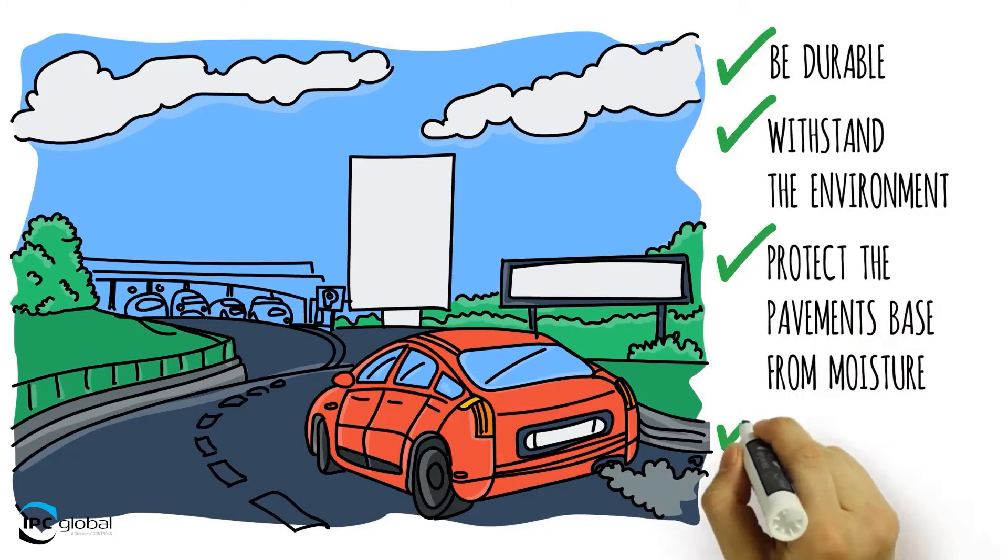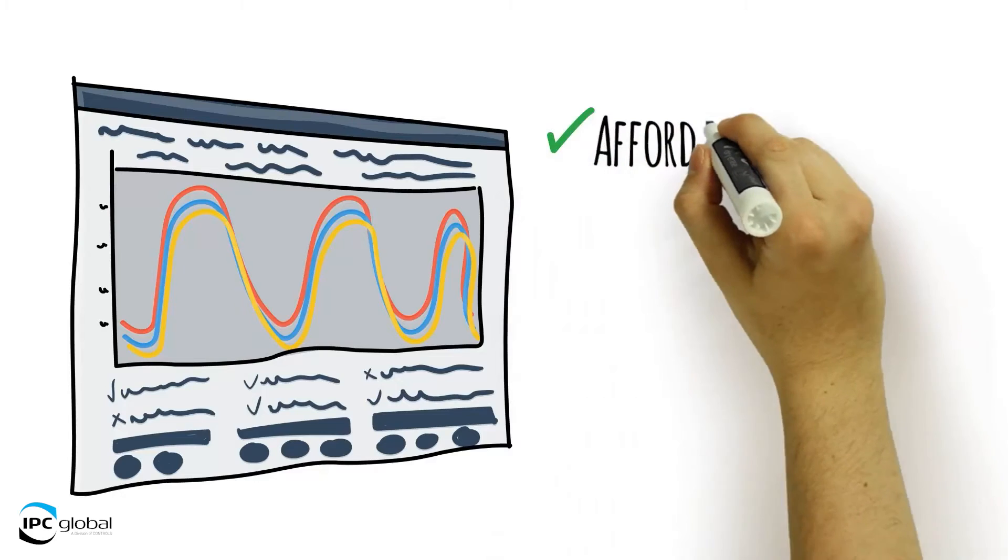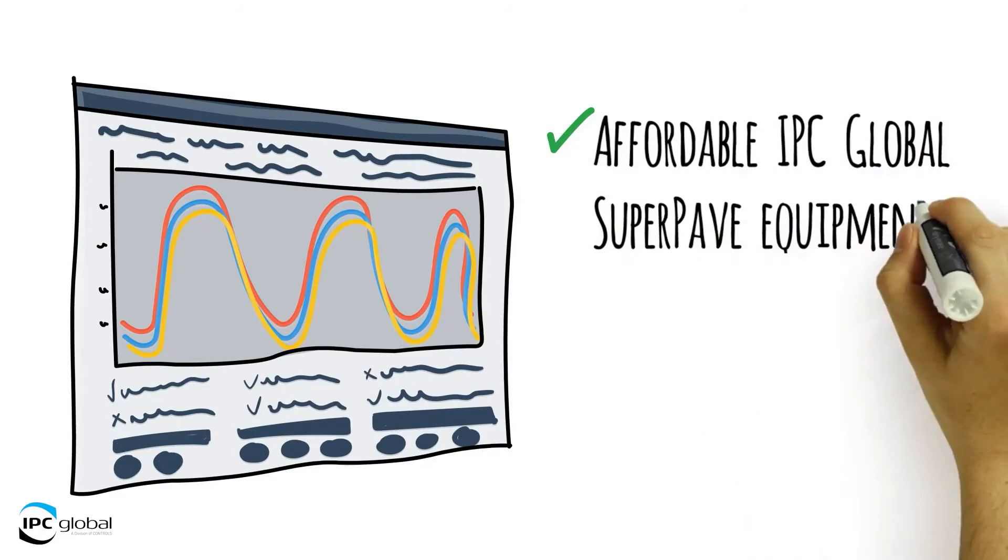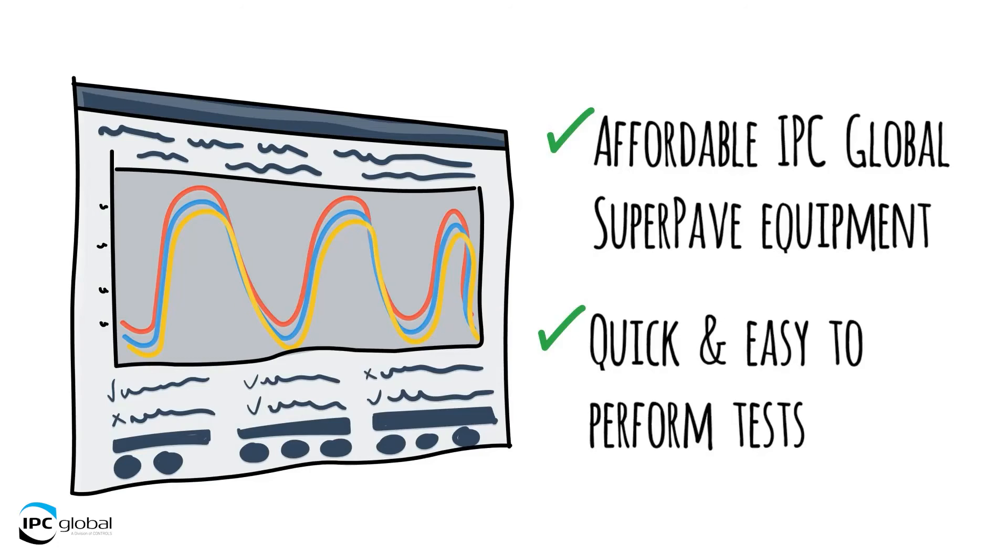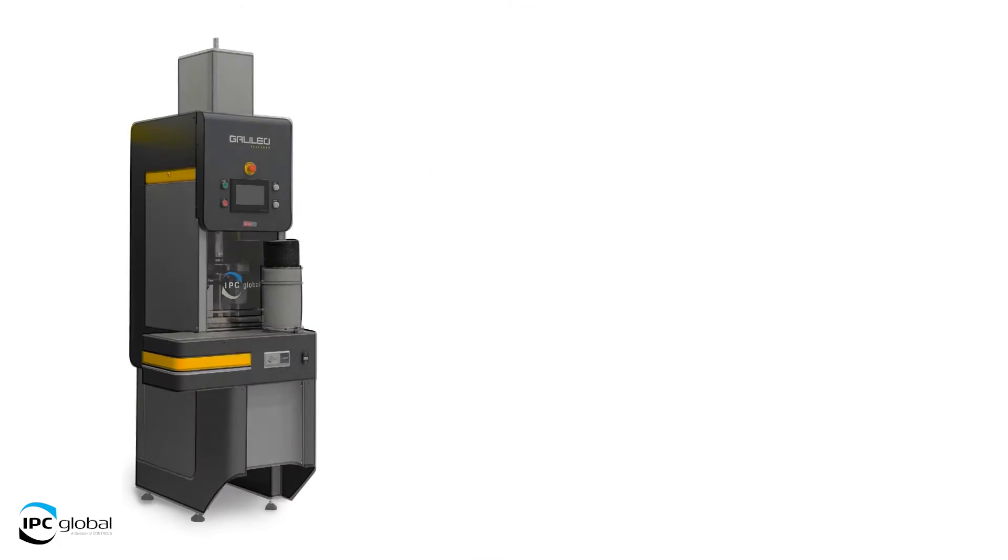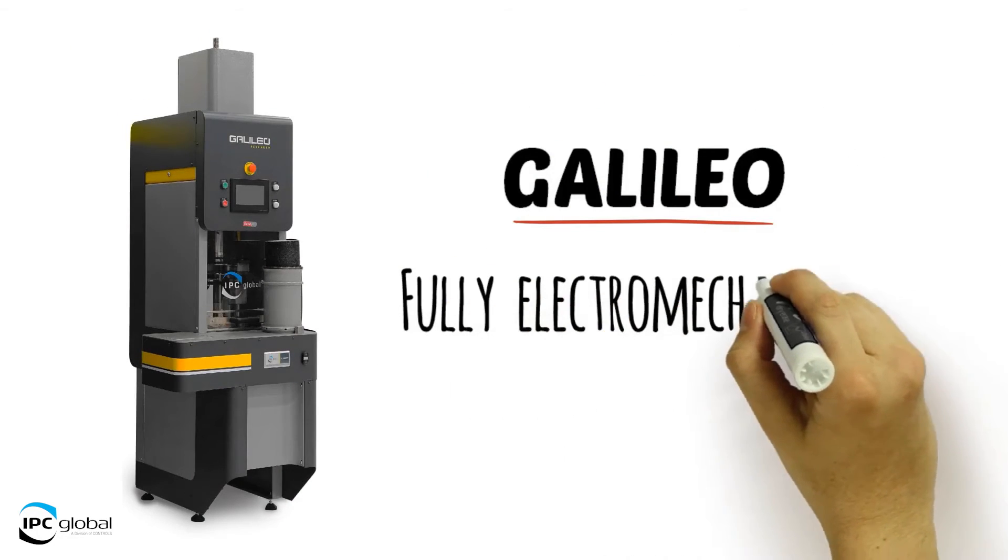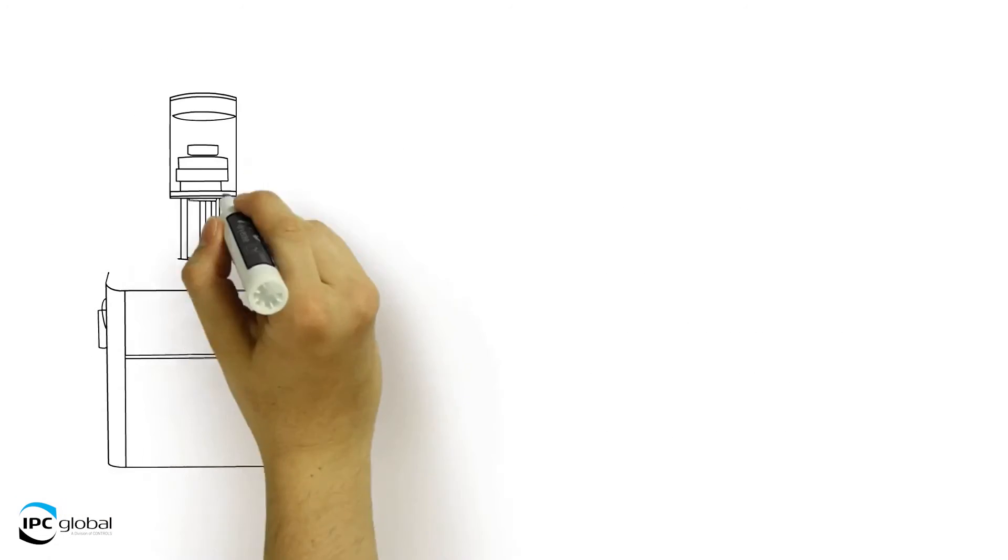New equipment from IPC Global makes these important sophisticated super pave tests accessible to everyone by being both affordable and easy to perform. For example, the fully electromechanical gyratory compactor Galileo, the next generation asphalt mixture performance tester AMPT Cube.